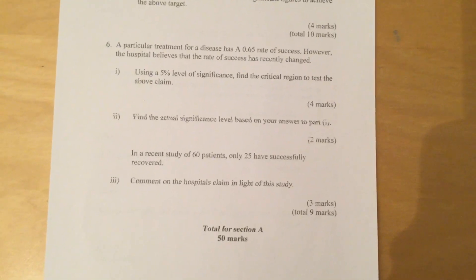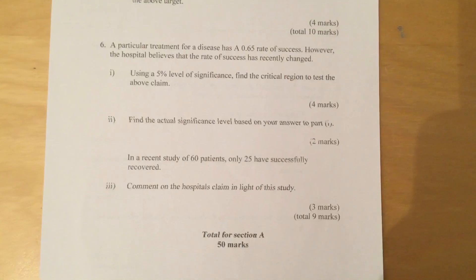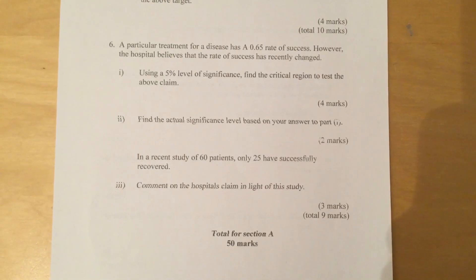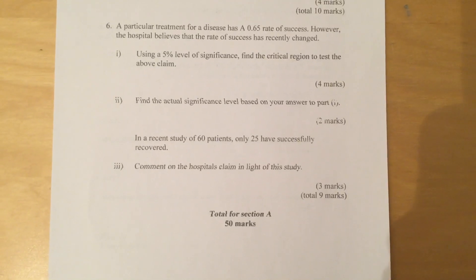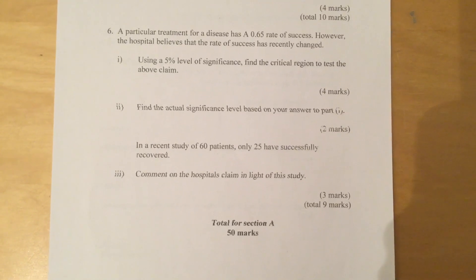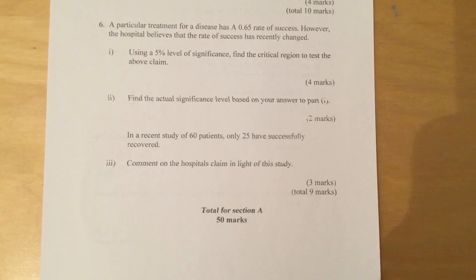Question 6: A particular treatment for a disease has 0.65 rate of success. However, the hospital believes that the rate of success has recently changed. Part 1: Using a 5% level of significance, find the critical regions to test the above claim.